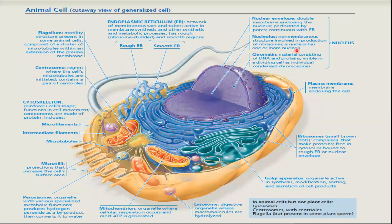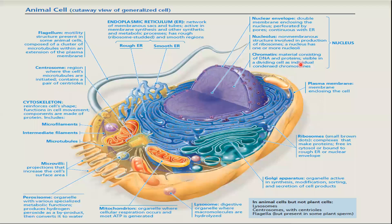Ribosomes are produced in the nucleus. A nucleus has one or more nucleoli depending upon the function of the cell. If the cell is involved in protein production, then obviously more ribosomes are needed and more nucleoli will be present. Then there is chromatin material, which consists of DNA and histone protein, visible in a dividing cell as individual condensed chromosomes. In a resting cell, chromosomes are in the form of a tangled network of chromatin fibers, so you cannot identify the structure of a chromosome.